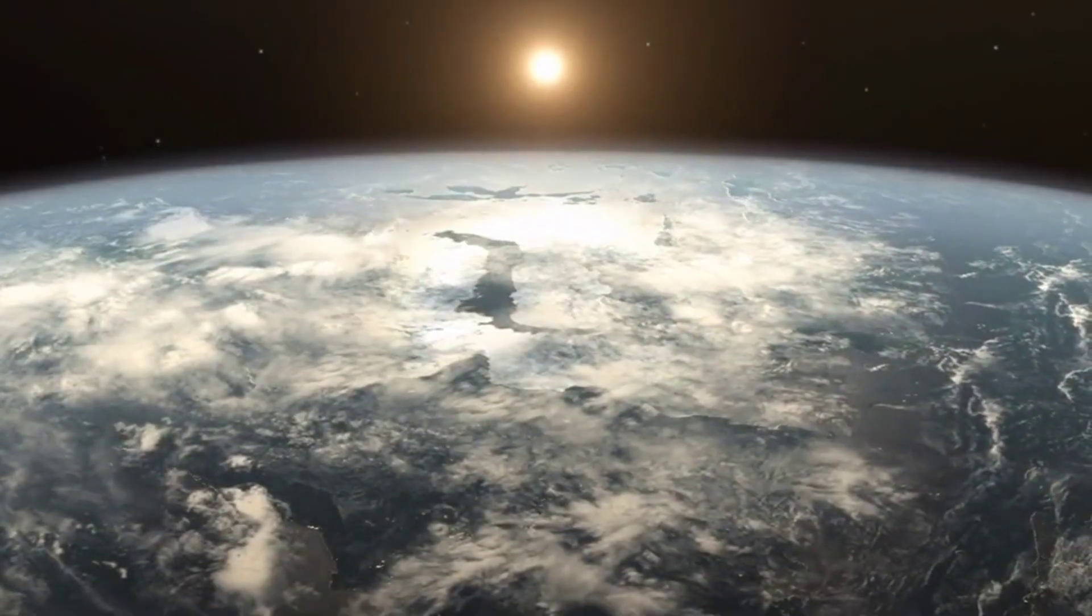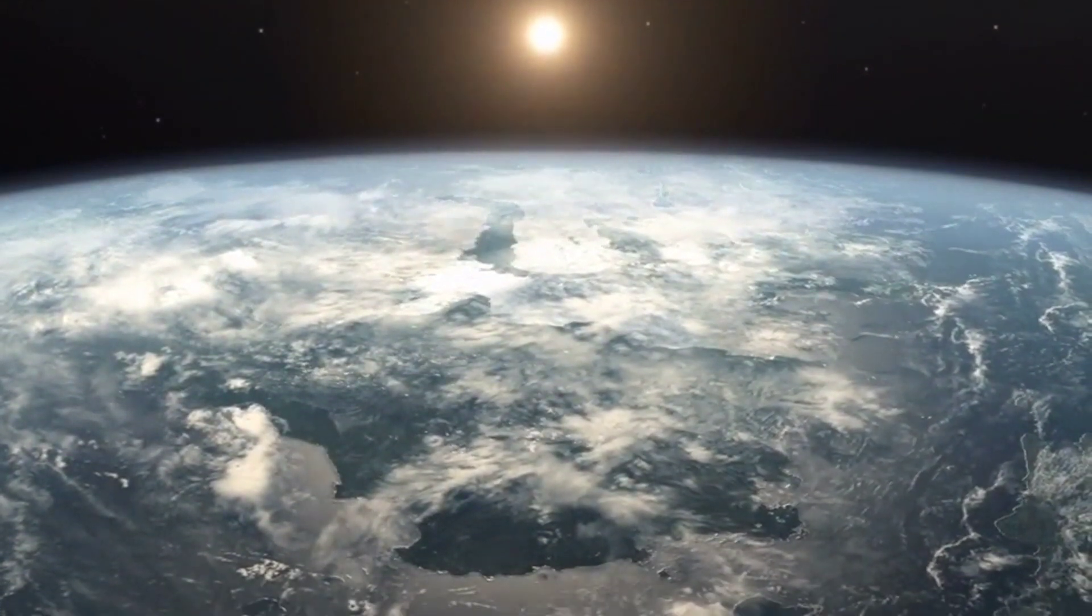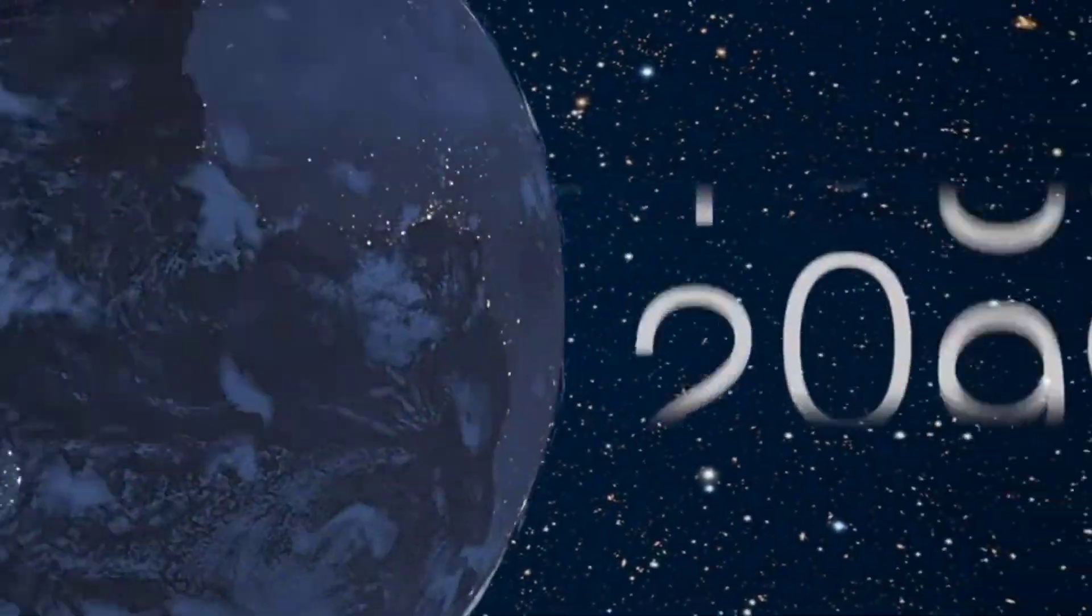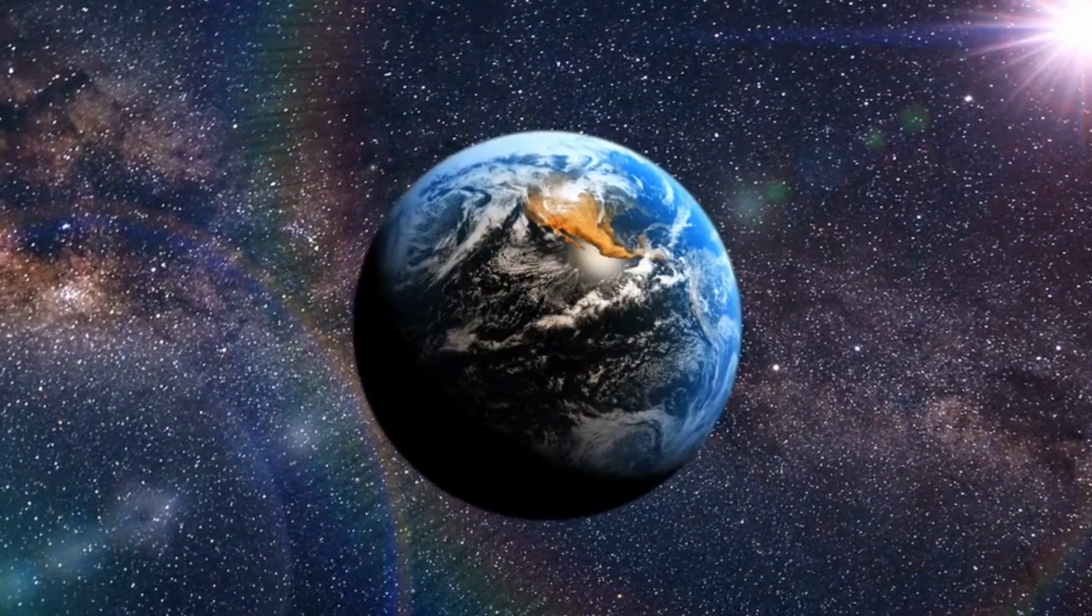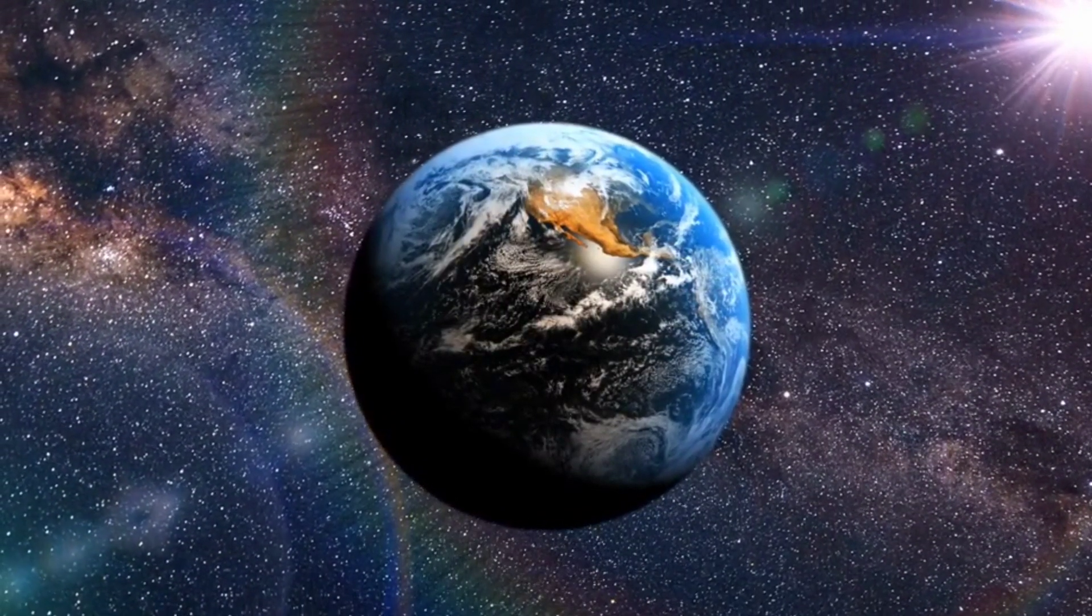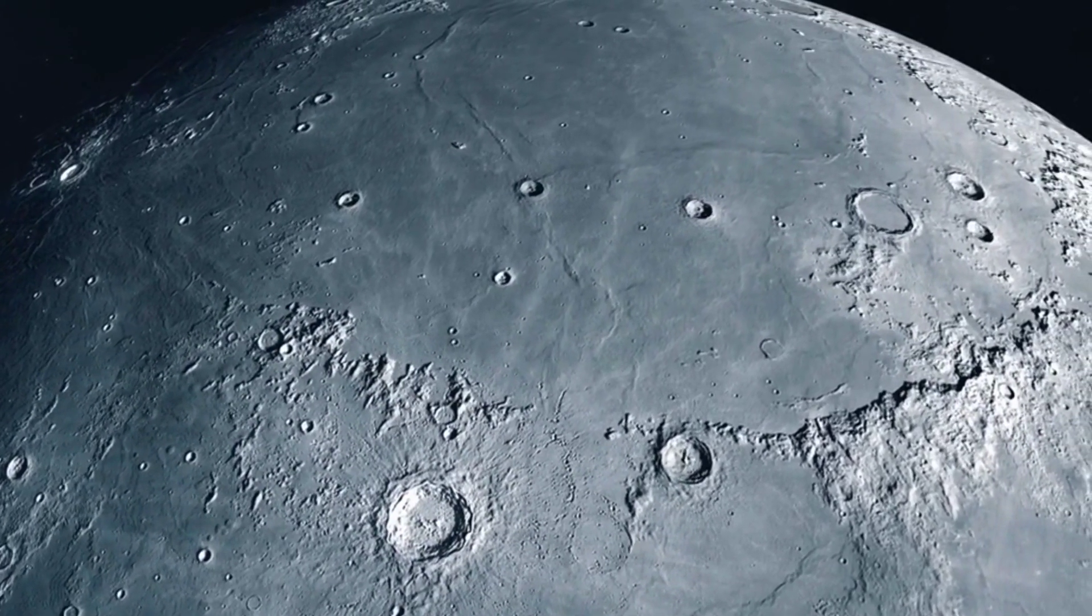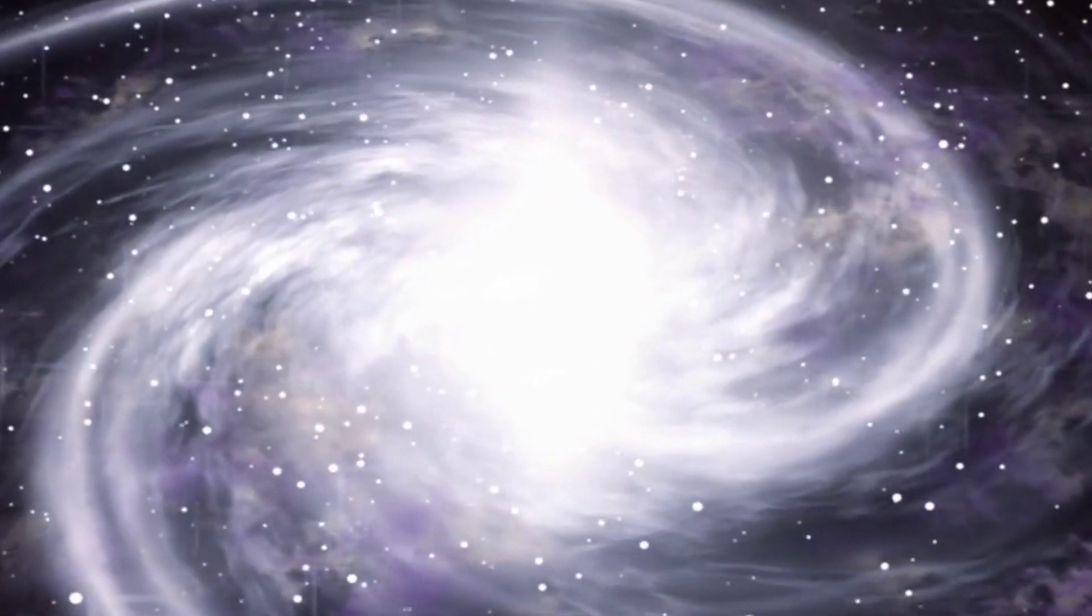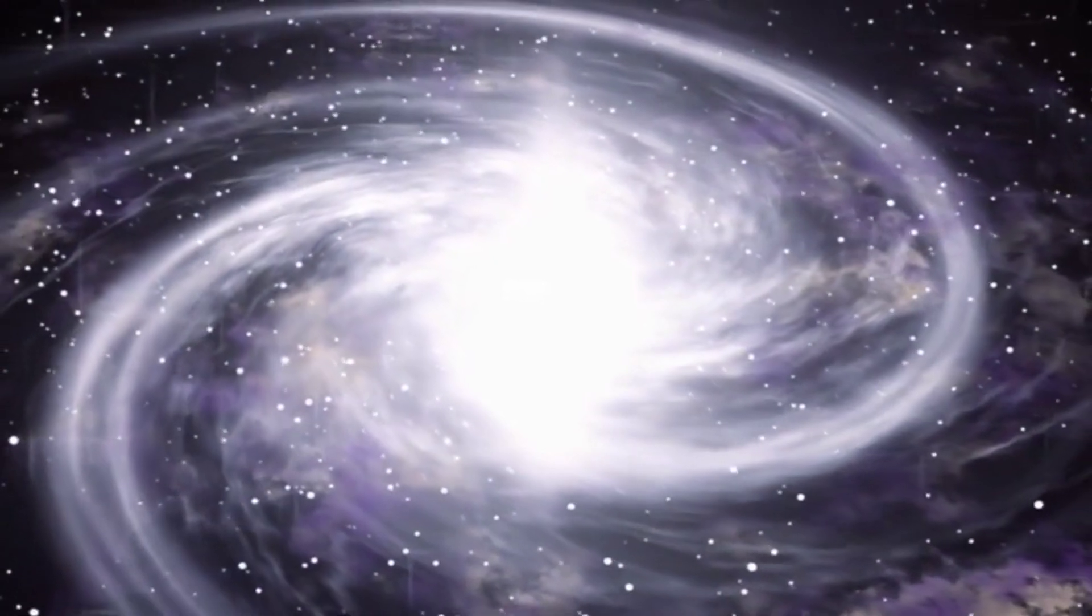In conclusion, the ancient moon's closer proximity to earth shaped our planet in numerous ways. It amplified tidal forces, influenced the earth's rotation, and stabilized its axial tilt. Studying these effects provides us with a greater understanding of our planet's history and the delicate balance that has allowed life to thrive. The moon, once much closer to us, holds the key to unlocking the secrets of our past. Let us continue to explore and unravel the mysteries of our universe, as the pursuit of knowledge knows no bounds.